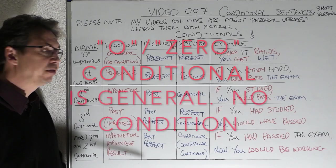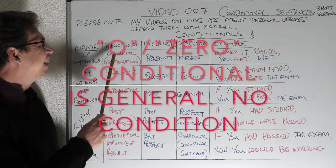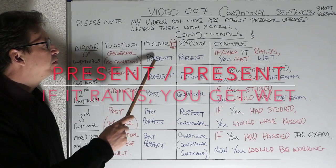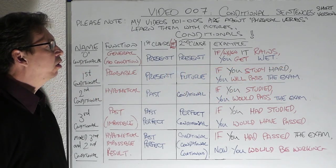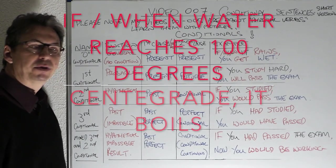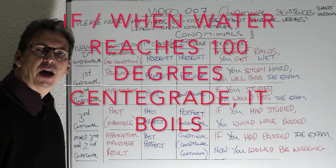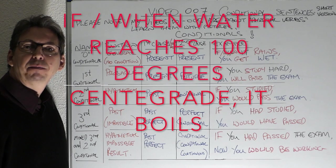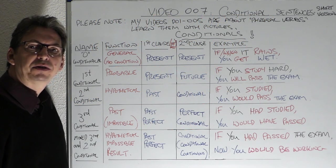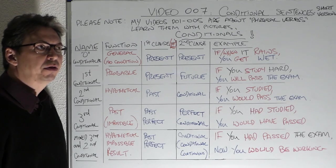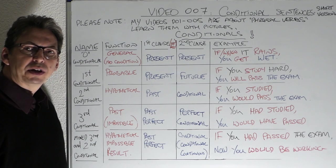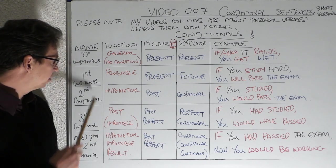What we call the zero conditional, because there is no condition. It's a general truth — it has no condition, it always happens. And we are using the present and the present. So we can say: if or when it rains, you get wet. It always happens. If or when water reaches 100 degrees centigrade, it boils. Or when water goes down to 0 degrees, it freezes.